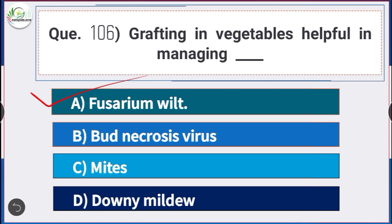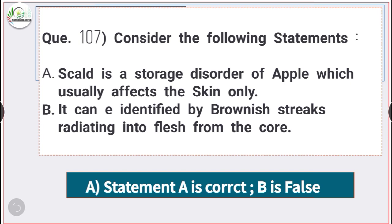Question number 106: Grafting in vegetables is helpful in managing — answer option E — fusarium wilt. Grafting in vegetables is helpful in managing fusarium wilt.